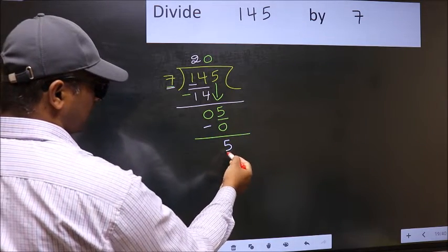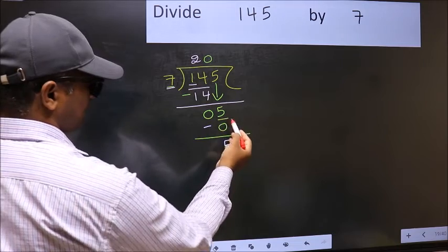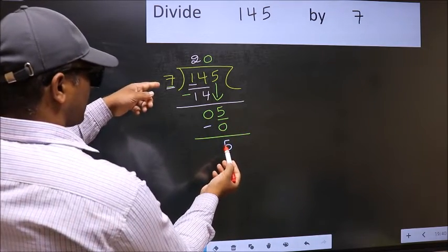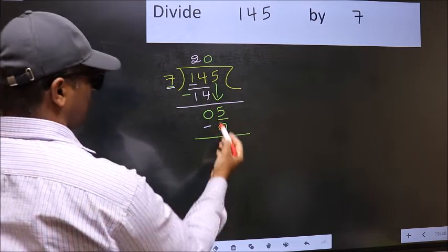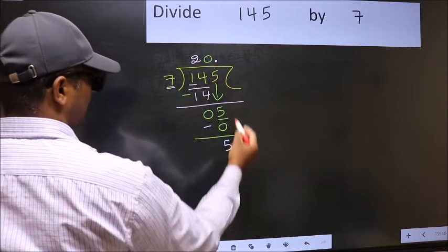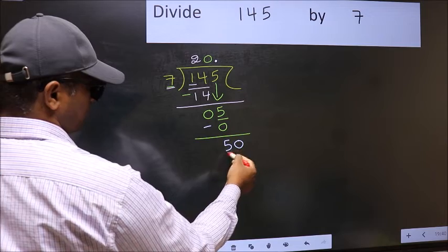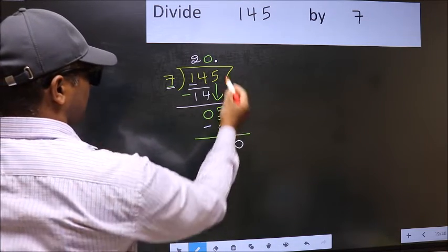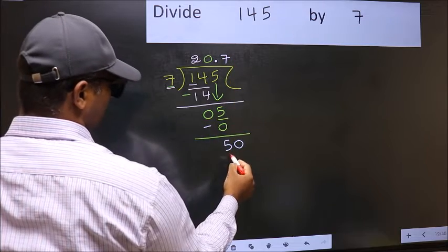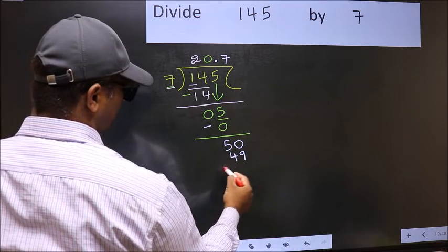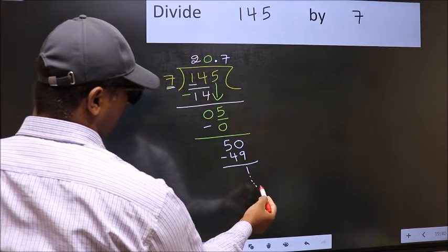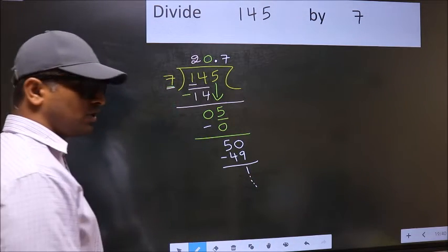Over here, we did not bring any number down, and 5 is smaller than 7. So now you can put dot and take 0. So, 50. A number close to 50 in the 7 table is 7 sevens, 49. Now you subtract, you get 1, and continue the division. I am not doing that.